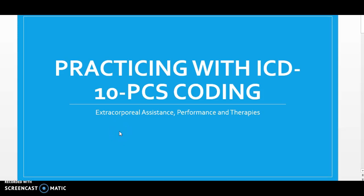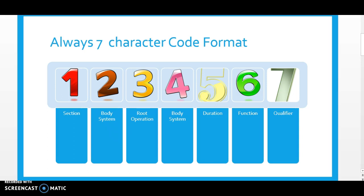Hello everyone, today I wanted to go over coding ICD-10 PCS in the extracorporeal assistance, performance, and therapy section of our ICD-10 PCS code book. Just like all the other ICD-10 PCS codes, this section also has seven characters. All ICD-10 PCS codes are always going to have seven characters. The character codes differ just a little in the extracorporeal assistance and performance and extracorporeal therapy section from other sections such as the medical and surgical, or the bigger ones that we're used to.